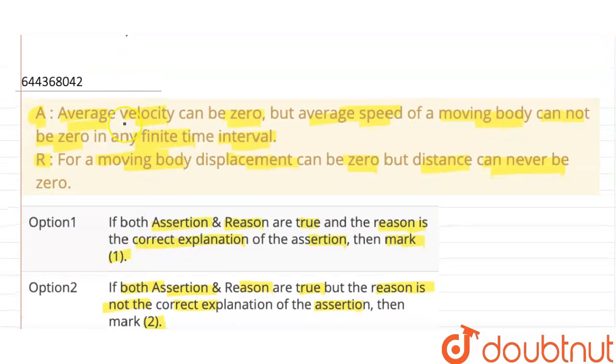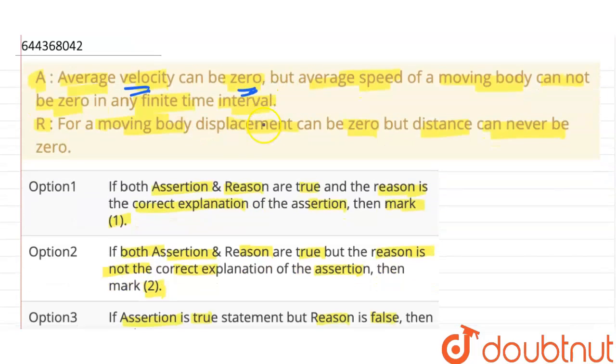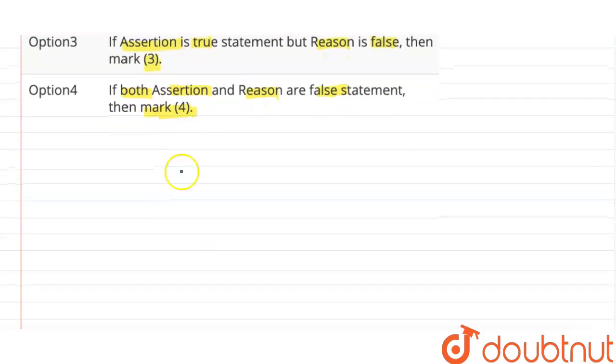Alright. So it says that average velocity can be zero. That is true. Why? Because displacement is a vector quantity and it can be zero. And now, average velocity is total displacement upon total time. So if displacement is zero, velocity is zero.